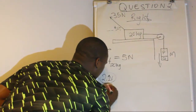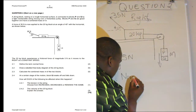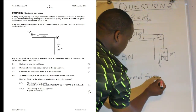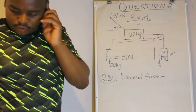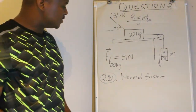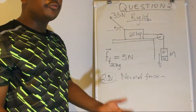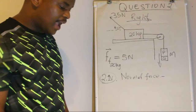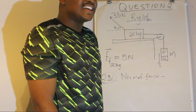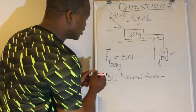Question 2.1 asks us to define the normal force. I won't write it down here but I will explain and define it. A normal force is the force exerted by the surface on an object, and that force is perpendicular to the surface. For example, I'm standing here on the surface and the surface exerts a force that is vertically upwards, perpendicular to the surface.